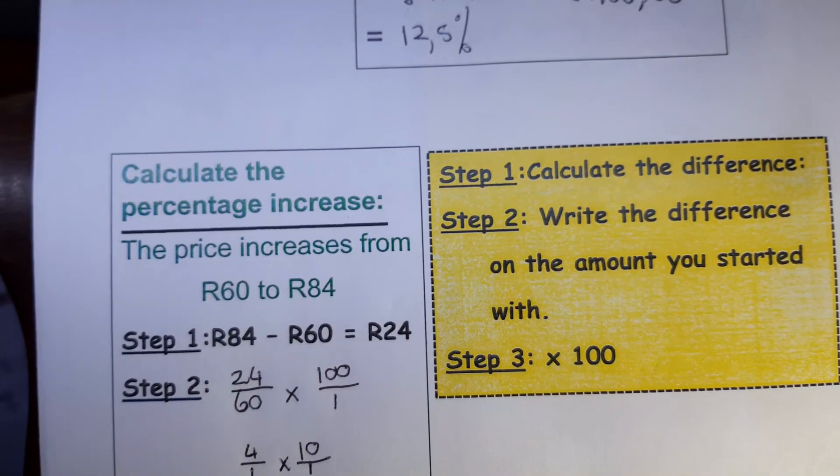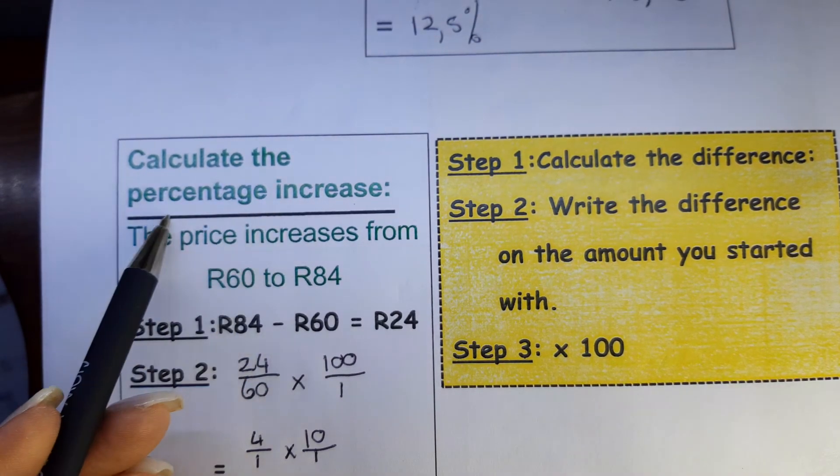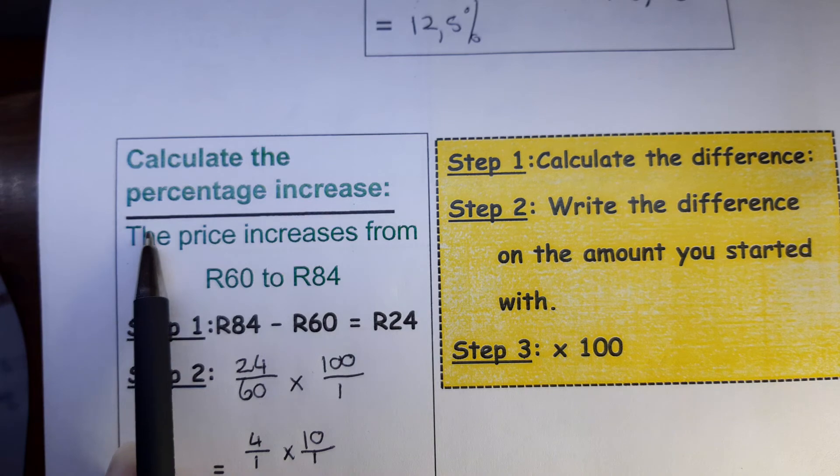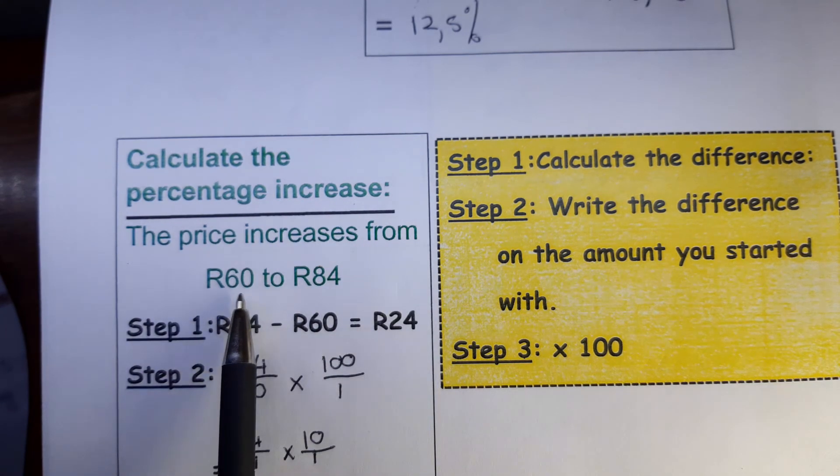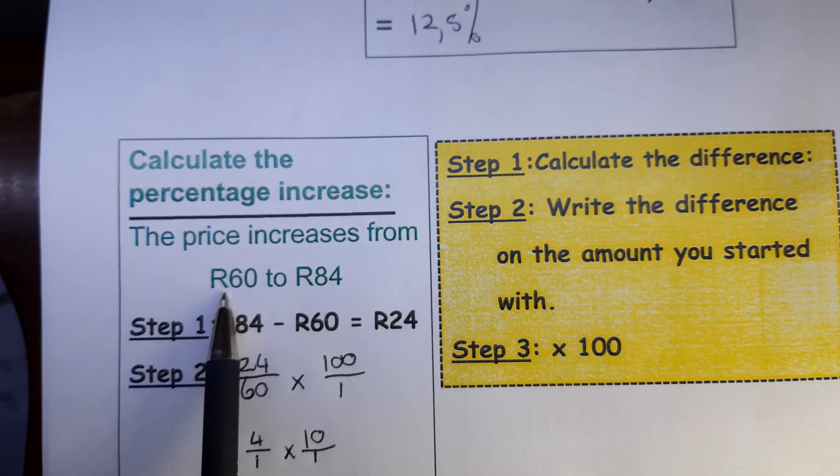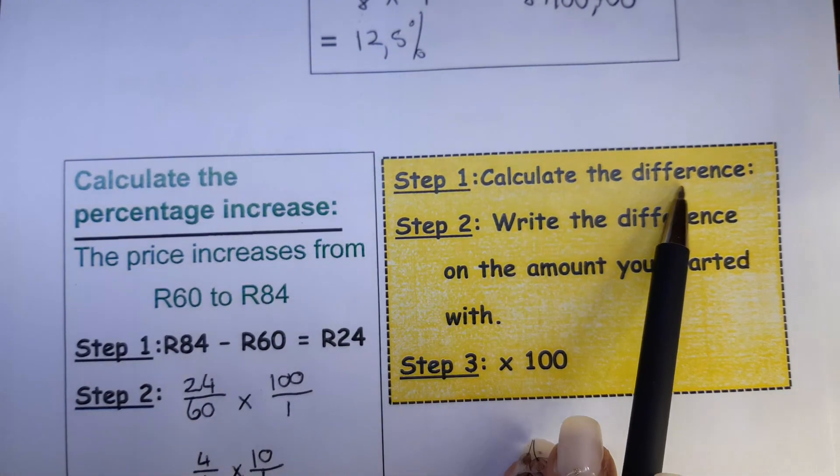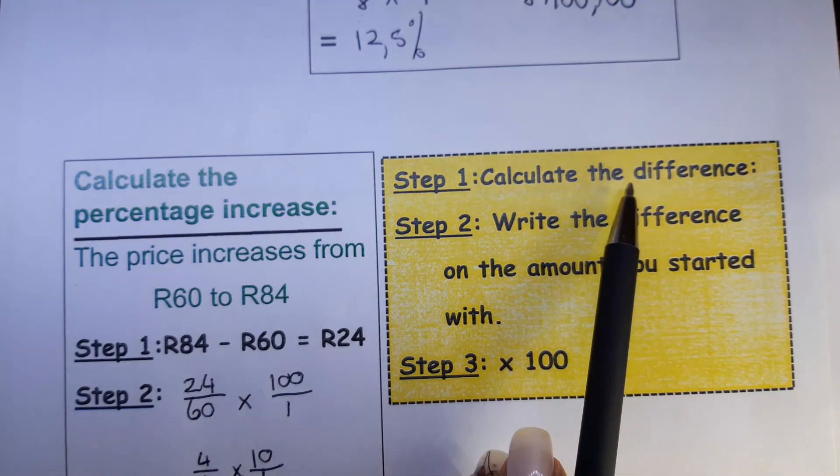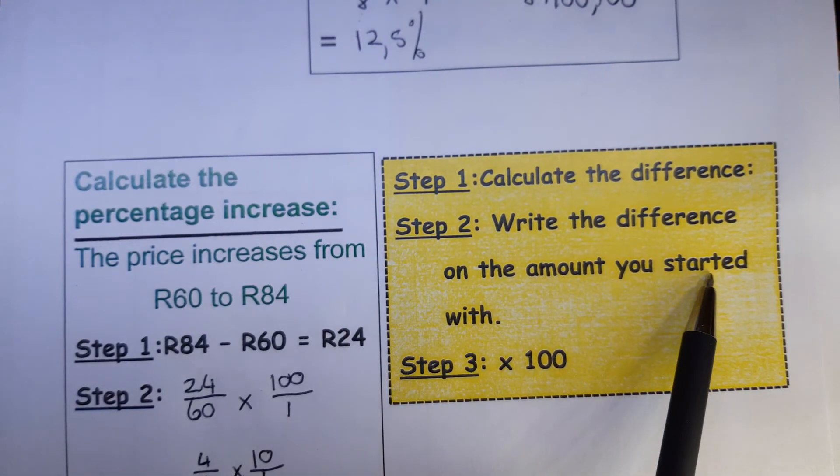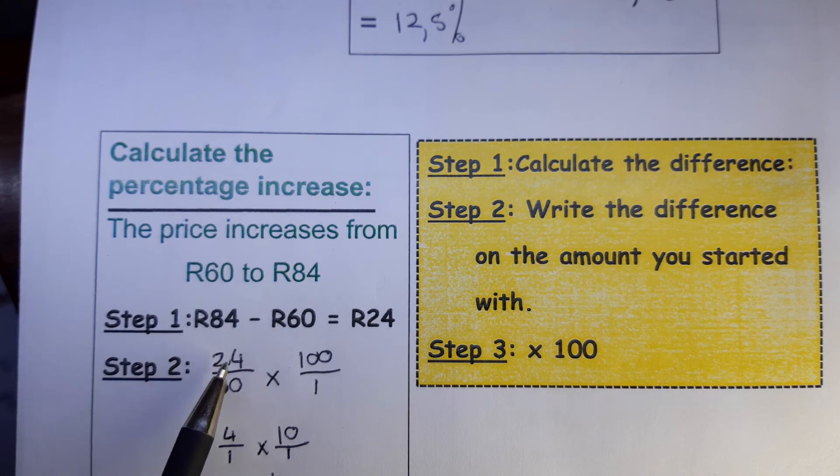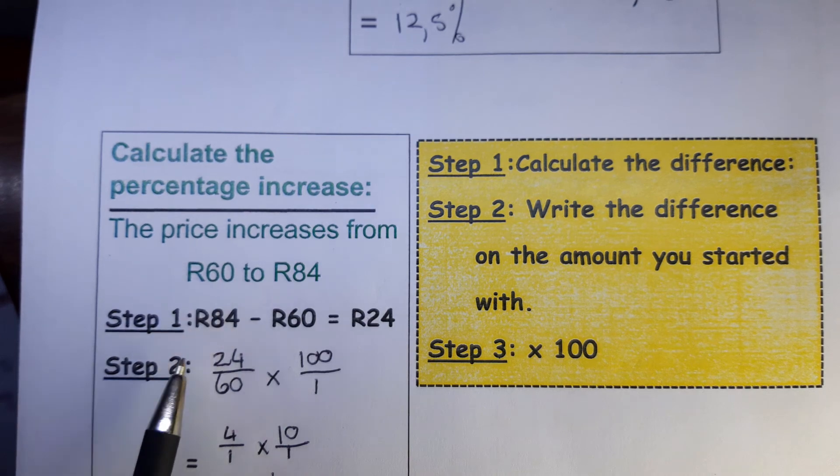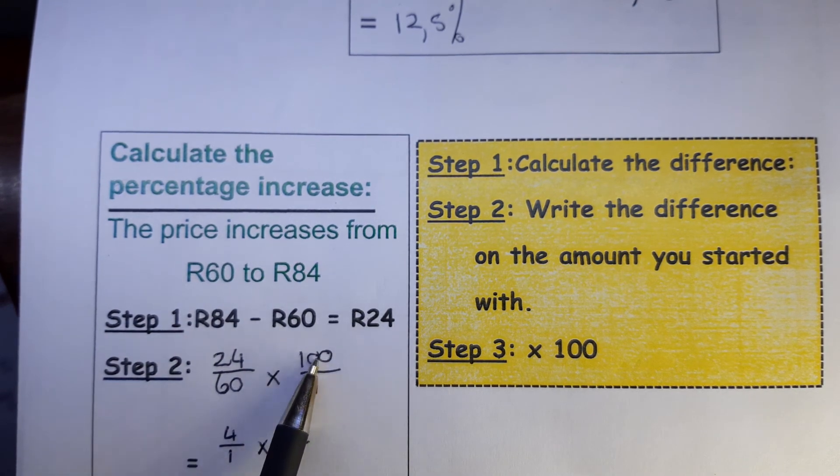Calculate the percentage increase. So again, percentage without a digit in front, so you know you will multiply with 100. But then they say, what is the percentage increase? So something costs 60 rand and now it costs 84 rand. So what percentage increase? Your step one is calculate the difference. So you take the biggest one minus the smallest, you get the difference. Then you write the difference on the amount that you started with. So you have, it was 24 rand, the difference, and I started with 60 rand.